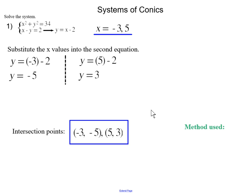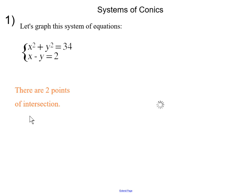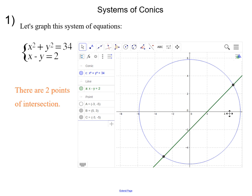The method we used in this problem was substitution, since we substituted one equation into another. Going back to the graph, you can see again those two points of intersection. It's important to double-check your work — Desmos is really good for that. You could also double-check algebraically by plugging the values back in; if both sides equal one another, your answers are correct.